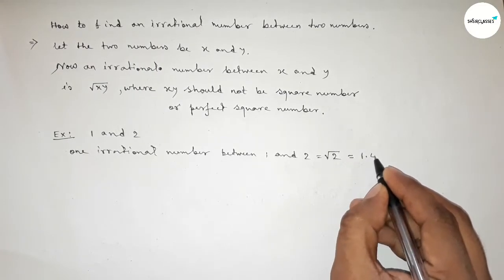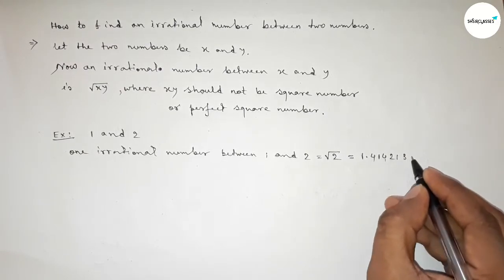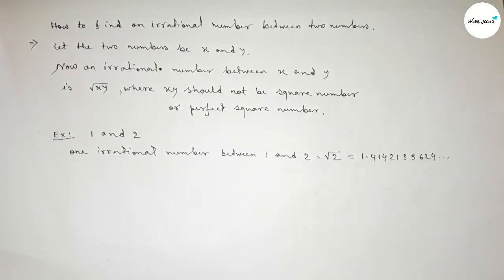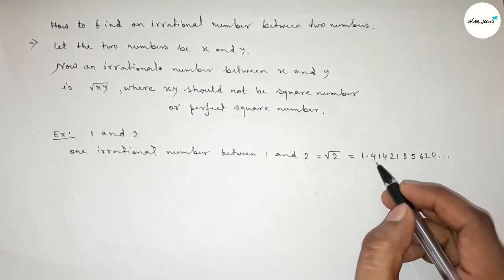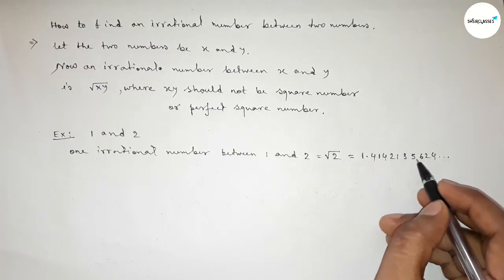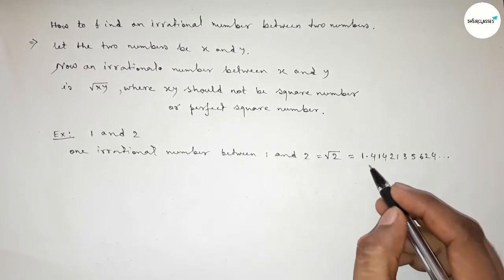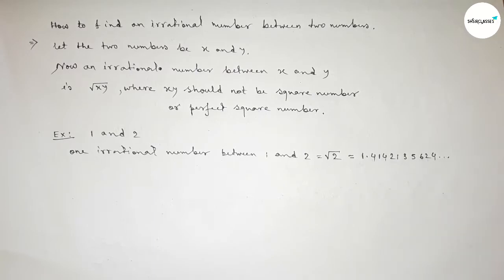And continuous. And here we can say that this is a non-recurring and non-terminating decimal, so this is obviously an irrational number. We cannot terminate this decimal.